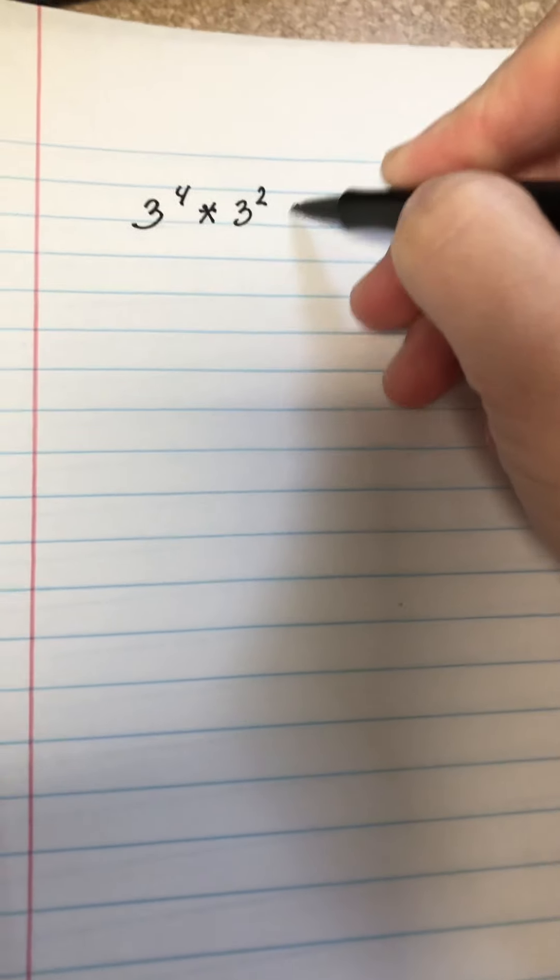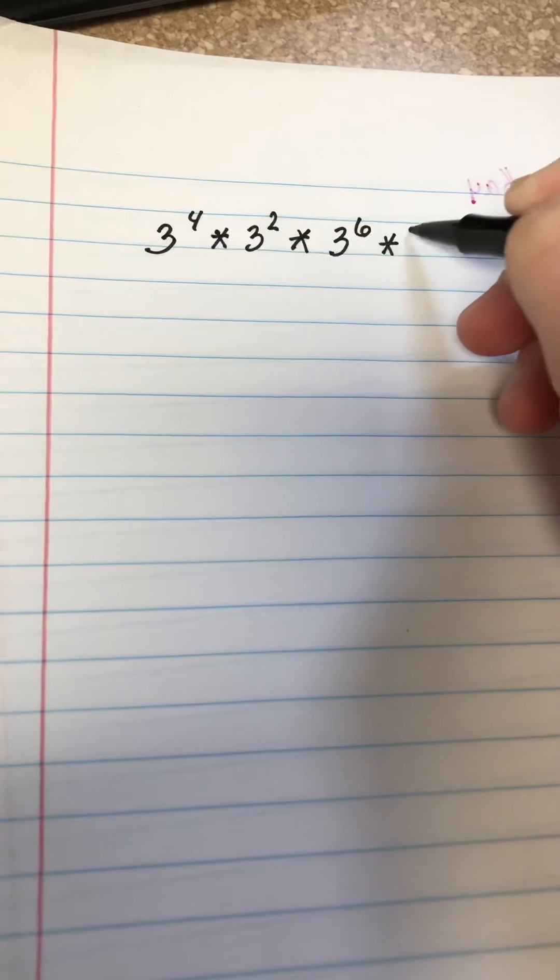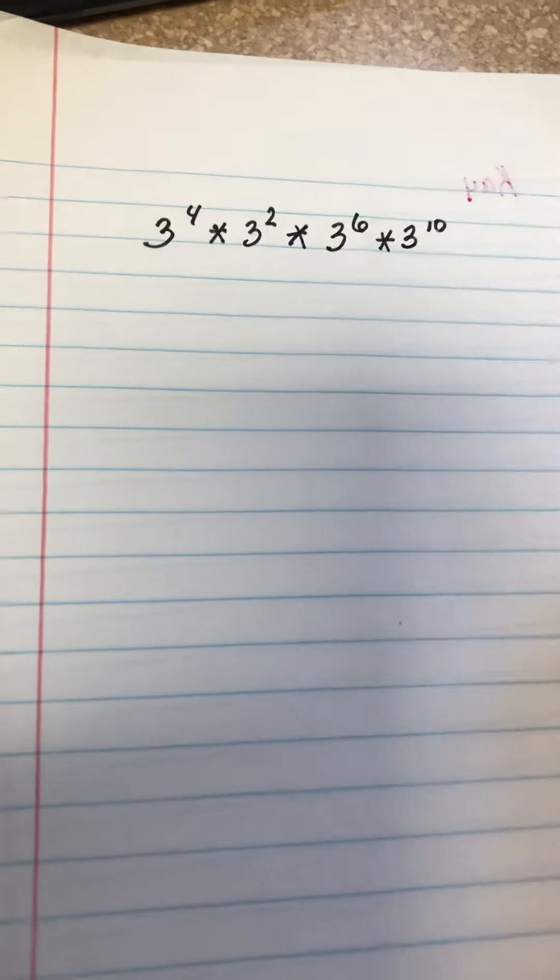We might have an exponent that has 3 to the 4th power multiplied by 3 to the 2nd power. That's what you're used to seeing so far. But it may have multiple times out here as long as the base is the same.